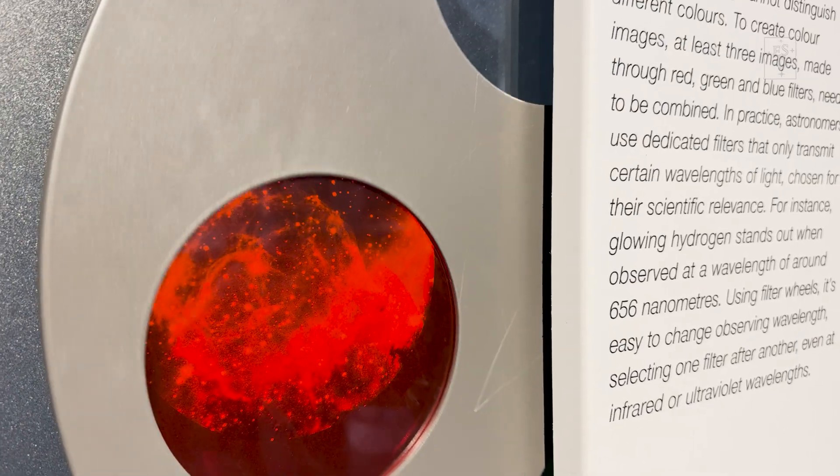If we now want to know how much, say, red is in the image, we can use a trick. We can pass the light through a filter that only lets the red part pass through. And then we still get a black and white image, but we now know that the black and white represents the amount of red that was in the original light. We can repeat this process for green and for blue. And that means we get three black and white images which each carry information on how much red, green and blue was in the original light.